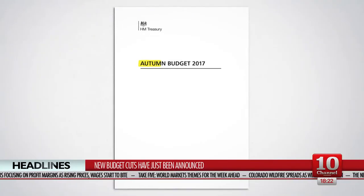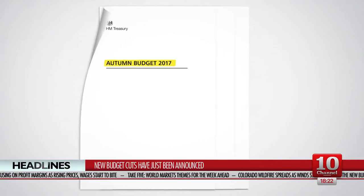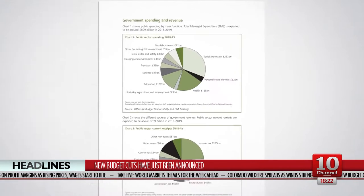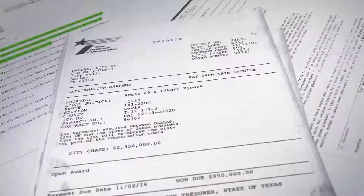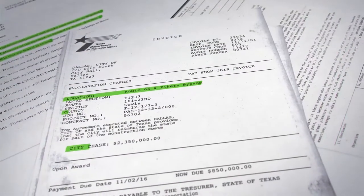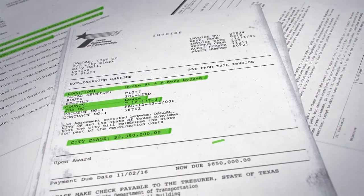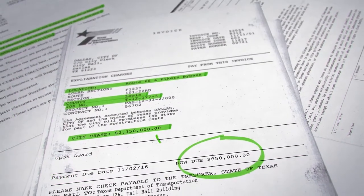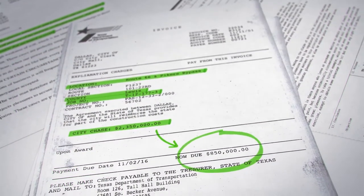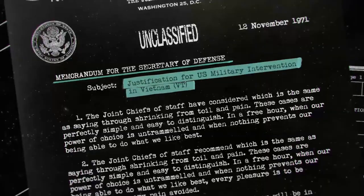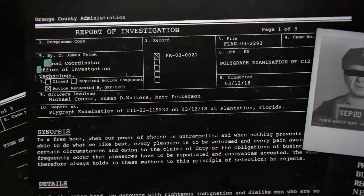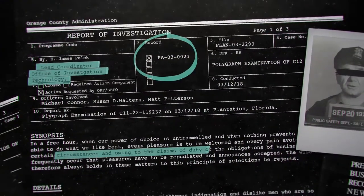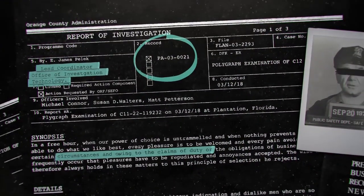Today the new budget cuts have just been announced, revealing significant changes to entitlements. A leak of financial documents has revealed the offshore interests of hundreds of high-profile companies. O'Keefe was suspended after a leaked police report identified the officer as the culprit.